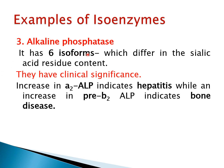The third example is alkaline phosphatase, which consists of six isoforms ranging from alpha 1, alpha 2 to pre-beta 1, beta 2, and so on, each with clinical significance. Alpha 2 ALP, if its level is increased in the serum, indicates hepatitis. Pre-beta 2 ALP indicates bone diseases.